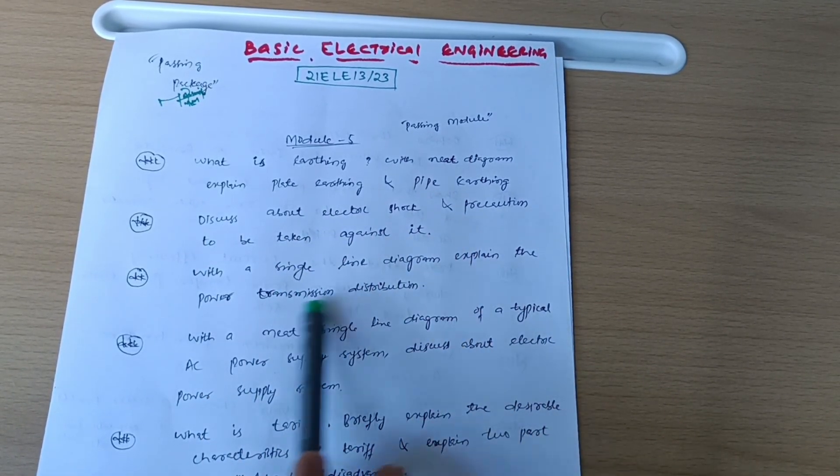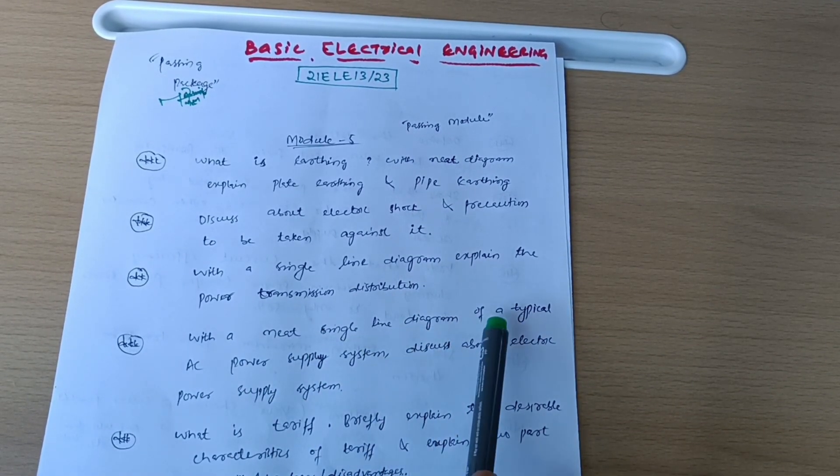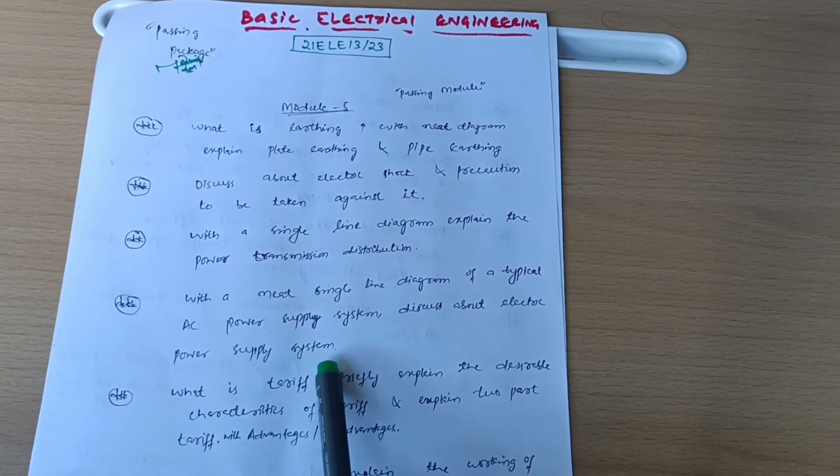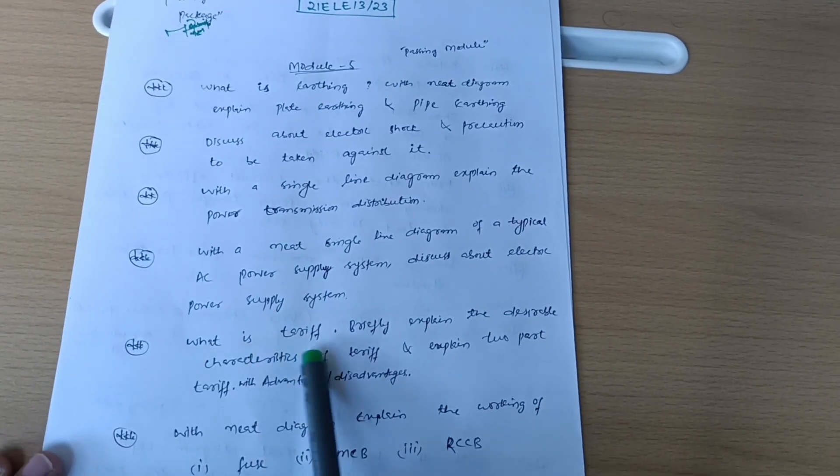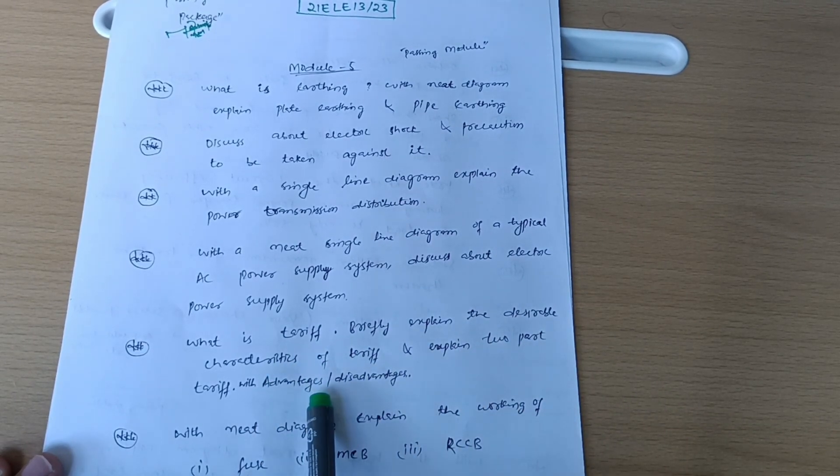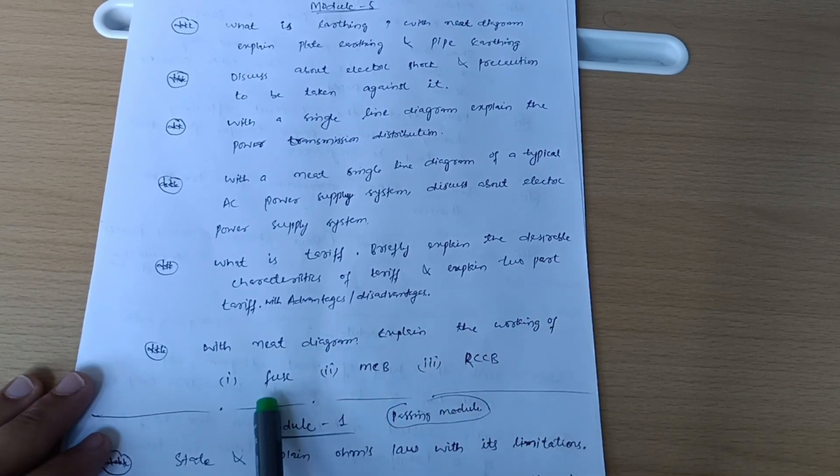With a single line diagram, expand the power transmission distribution with a neat single line diagram of a typical AC power supply system. Discuss about electric power supply system. Next is what is tariff? Briefly explain the desirable characteristics of tariff and expand two-part tariff with advantages and disadvantages.